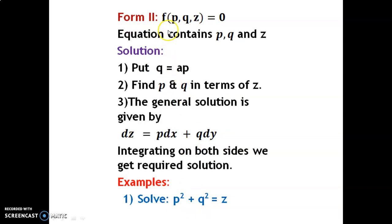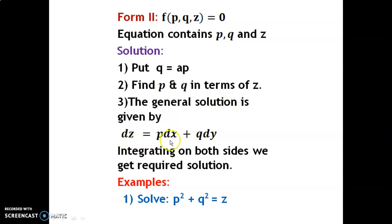Form 2: f(p,q,z) = 0 — equation contains p, q, and z. Steps: Step 1, put q = ap. Step 2, find p and q in terms of z. Step 3, the general solution is given by dz = p dx + q dy. Integrating on both sides, we get the required solution z in terms of x and y.